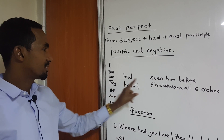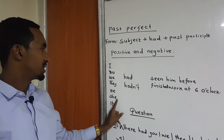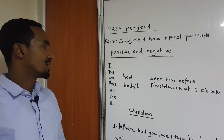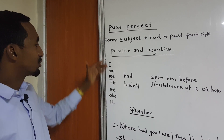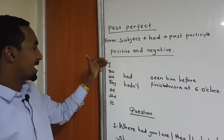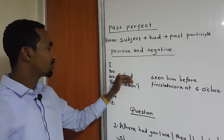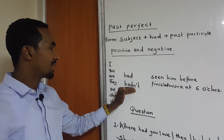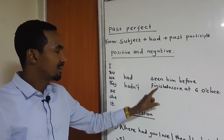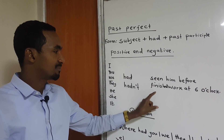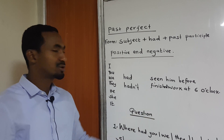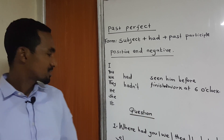He had seen. She had seen. It had seen. So this is the positive and the negative. Remember, we use had and hadn't, and also the past participle — seen and finished in this case.